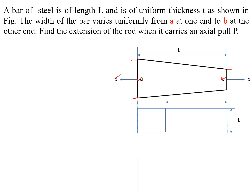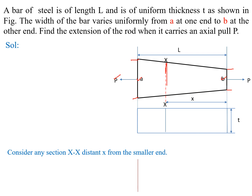Let us see the solution. Consider any small section at x-x, at distance x from the smaller end. Let us consider a small portion at x-x. The length of this small section is delta x. Here wx is the width of the small section, and we have to find the relation of wx in terms of a, b, L, and x.